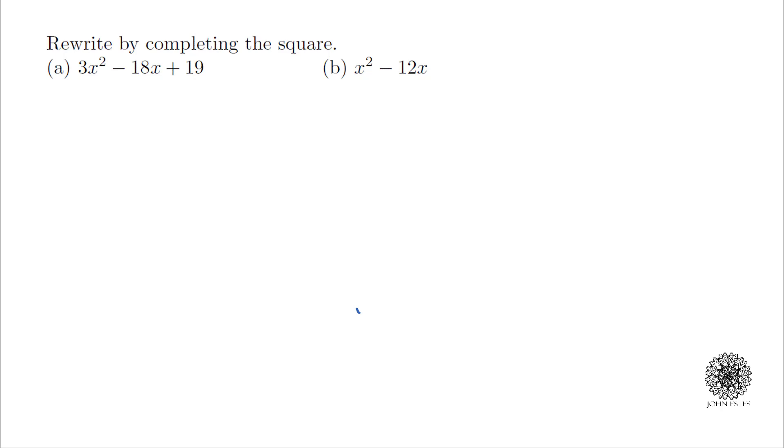For this first one, what I want to do is I first need the leading coefficient to be a one. Since I have a leading coefficient 3 here, I can't complete the square quite yet. So what I'll do here is I'm actually going to group these first two terms together. Out of these first two terms I can take out a 3 and so then I'm left with x squared minus 6x plus 19.